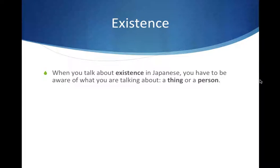The first important point: when we talk about existence in Japanese, you have to be aware of what you're talking about. Is it a thing or is it a person? There's a difference. There's one verb for things, which is Arimasu — the dictionary form being Aru.